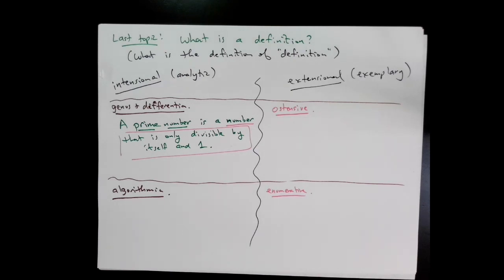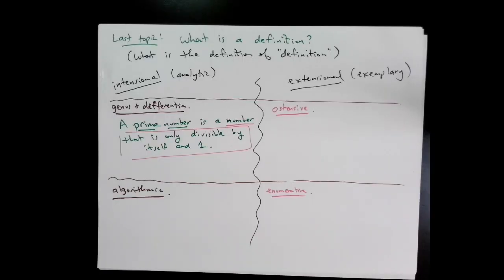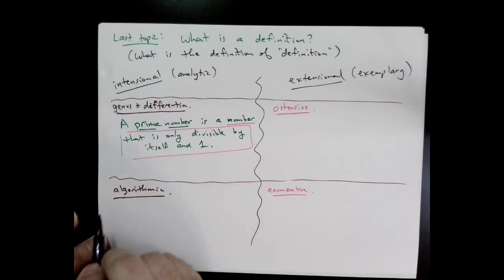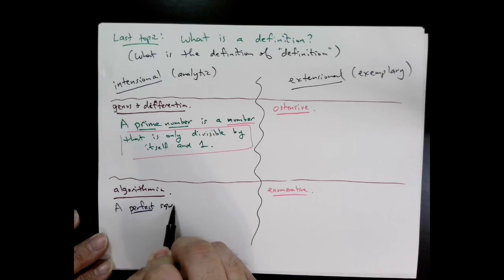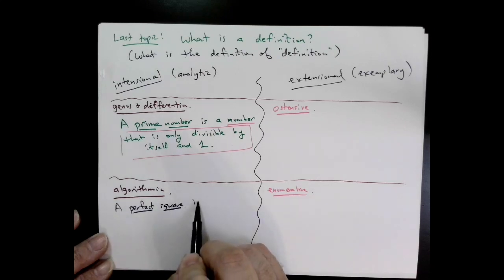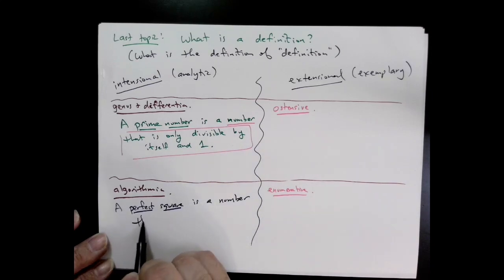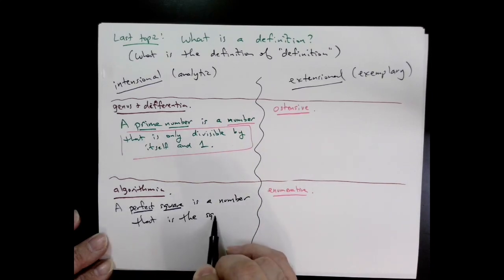This definition always begs another definition. In other words, we can't define prime number without defining number. Algorithmic is an example where we actually write down a definition that allows us to determine all of the examples in that set. For example, when we say a perfect square is a number that is the square of an integer, not only does that tell us what it is, it also allows us to compute all of them. I can list all the perfect squares: 1², 2², 3², 4²—I can get all of them from the definition.